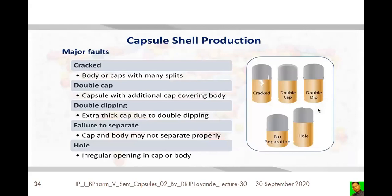During capsule production, various faults may occur and such faulty capsules must be rejected. The first fault is cracking — cracks in the cap or body, with splits in the shell. Another fault is double cap — a capsule with an additional cap covering the body due to double dipping, resulting in an extra-thick cap.